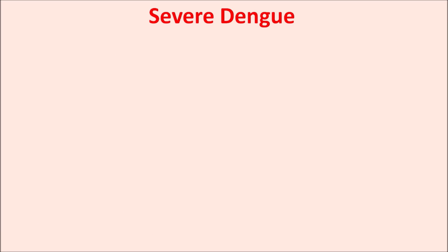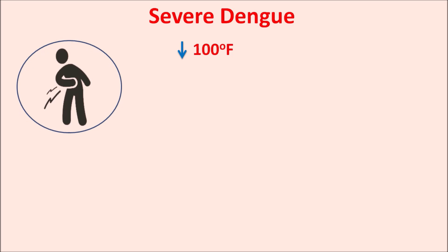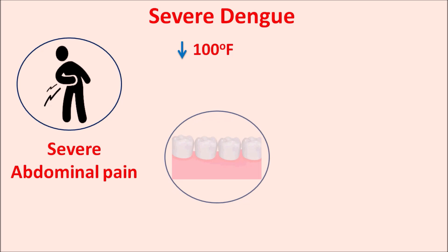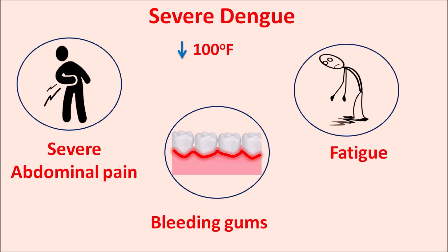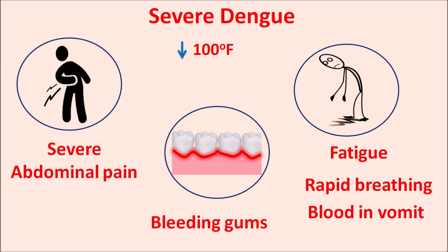We can also observe severe dengue symptoms in some patients, though these are rare. These symptoms are initiated with a decrease in body temperature, falling to 100 degrees Fahrenheit instead of high-grade fever. Severe symptoms are associated with hemorrhagic conditions, including severe abdominal pain, bleeding gums, increased weakness resulting in fatigue, rapid breathing, and blood in the vomit. All these are severe, fatal symptoms of dengue.